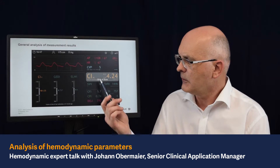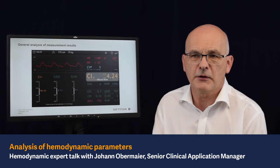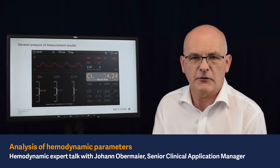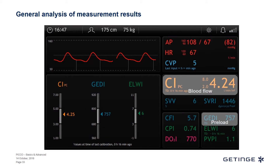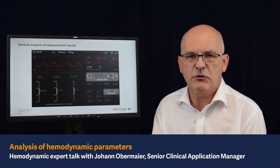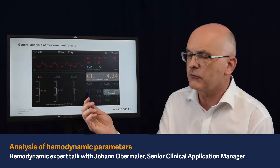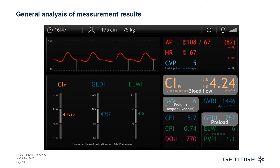When we look at cardiac index, we need to know its determinants. The determinants of cardiac index include the preload — preload volume — which is represented here with the global end-diastolic volume index. When we talk about preload and fluid status, we may also consider the stroke volume variation, but of course this requires a patient under fully controlled mechanical ventilation.